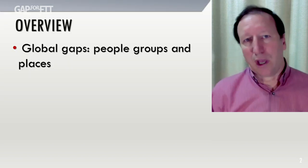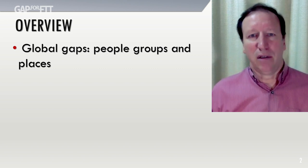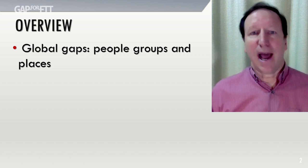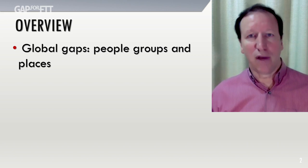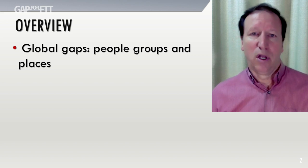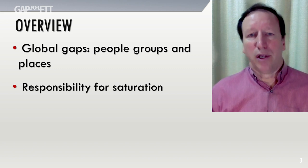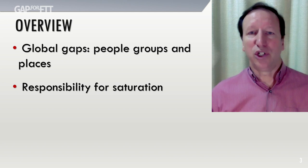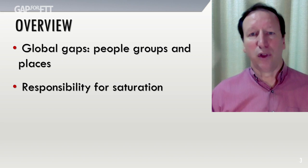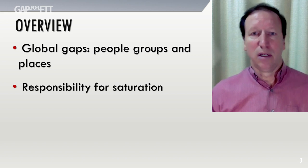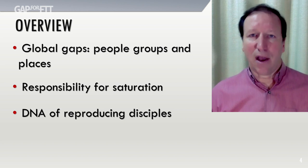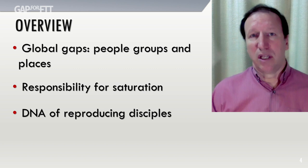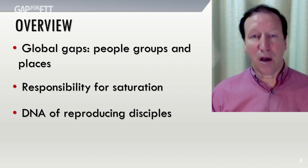Generally, when we start thinking of global best practices, I would think of it in three ways. One is addressing gaps — finding where movements are not happening and seeking to get movement started. This can happen at the global level, at the regional level, at the national level, and at the local level. Secondly, it's important to have someone who is taking responsibility for saturation within those areas, whether that's ethno-linguistic people groups or geography. And then finally, we must pay attention to the DNA of the disciples being produced, because the DNA of the disciples will become the DNA of the movements.